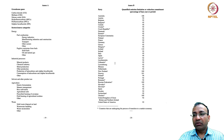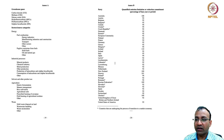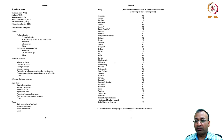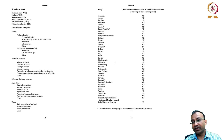The listed countries include: Australia, Austria, Belgium, Bulgaria, Canada, Croatia, Czech Republic, Denmark, Estonia, European Community, Finland, France, Germany, Greece, Hungary, Iceland, Ireland, Italy, Japan, Latvia, Liechtenstein, Lithuania, Luxembourg, Monaco, Netherlands, New Zealand, Norway, Poland, Portugal, Romania, Russian Federation, Slovakia, Slovenia, Spain, Sweden, Switzerland, Ukraine, United Kingdom of Great Britain and Northern Ireland, and United States of America.